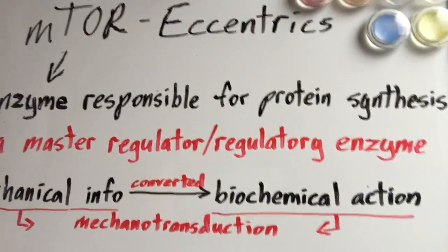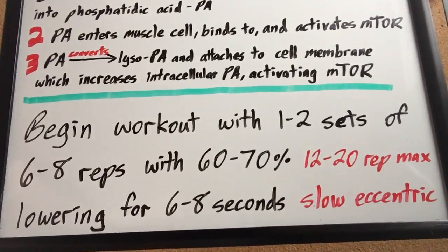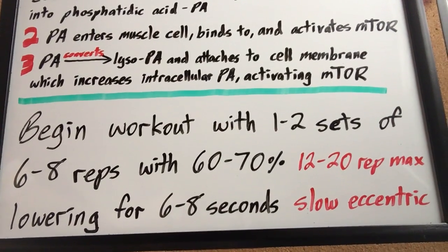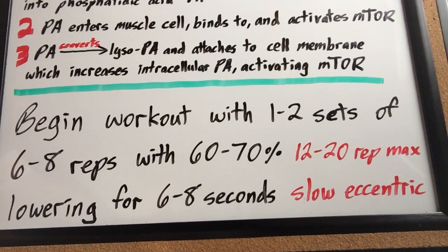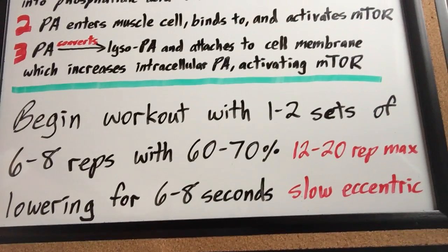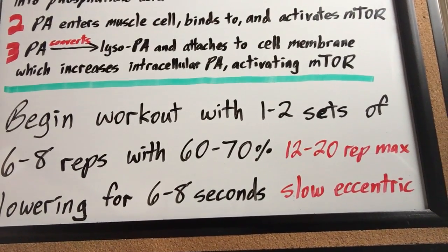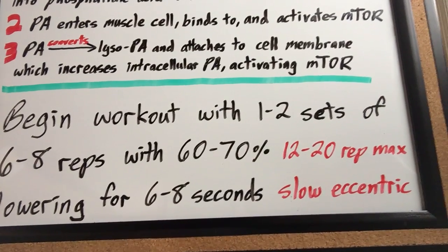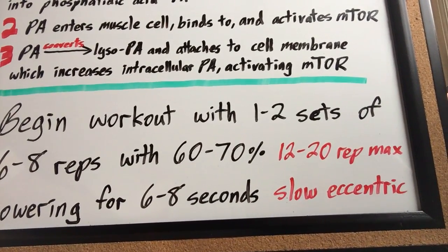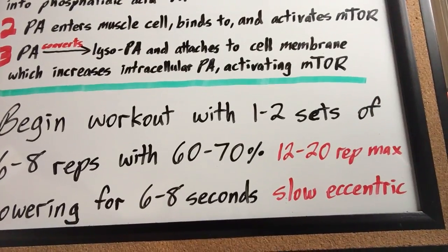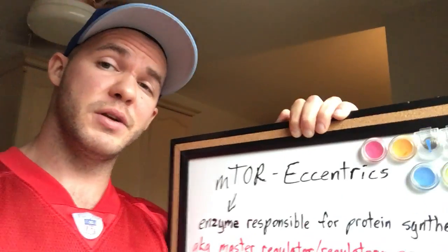So how can we practically apply this? At the beginning of every workout, after you warm up, do one to two sets of six to eight reps with 60 to 70 percent of what you could lift for one rep, lowering for six to eight seconds. Use a weight you could normally lift 12 to 20 times, but you're only doing six to eight reps because the slow eccentric dramatically increases time under tension. Just focus on that slow eccentric — because that's when the magic happens.